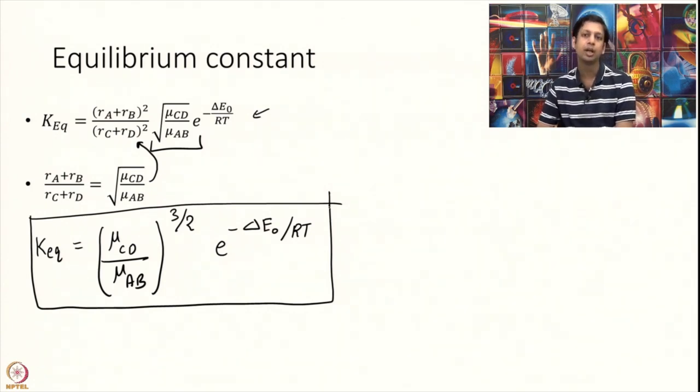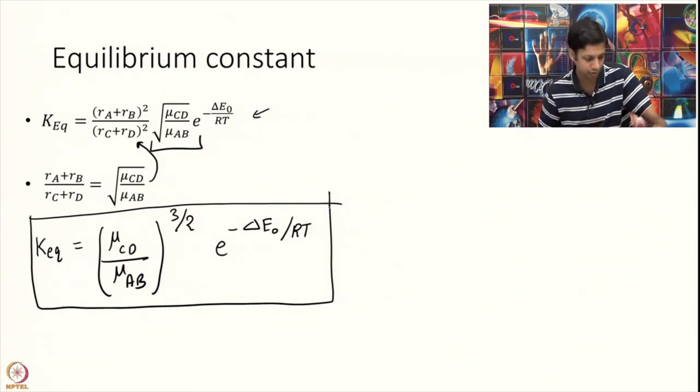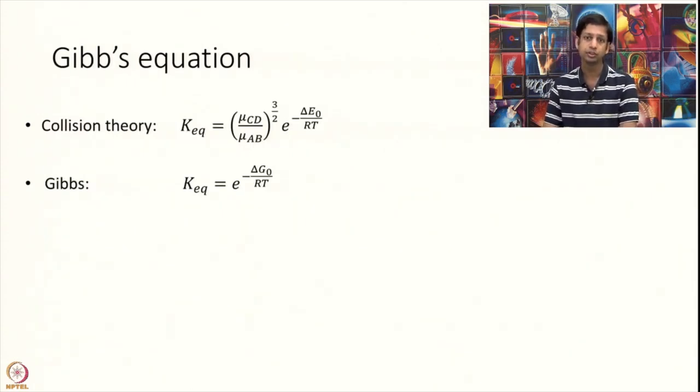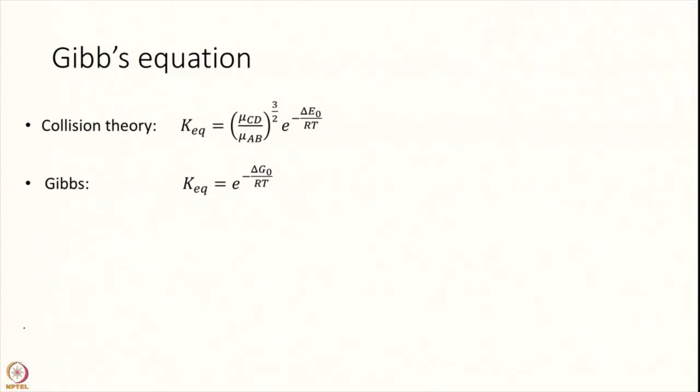It goes somewhat deep and once we discuss transition state theory and partition functions this we will revisit them in the language of partition functions. There is more about this that we come to later. One comment that I do want to make today itself is relation with Gibbs equation. Gibbs much earlier had written an equation that relates the equilibrium constant with the free energy. And Vanthoff's equation actually comes out of this. So let us relate I have an equilibrium constant from collision theory and the equilibrium constant from Gibbs equation.